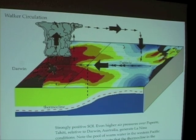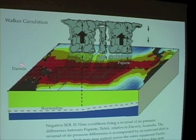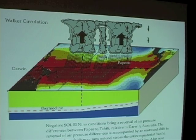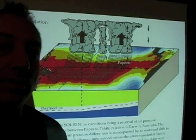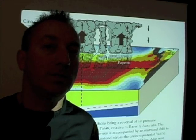El Niño is just the opposite. The whole system breaks down, so to speak. Trade winds relax. The air pressure between Papeete and Darwin switches, so we may have higher pressure here and lower pressure here, or nearly the same pressure. Trade winds start to blow in the opposite direction, and that's one of the first indicators of an El Niño — because trade winds begin to blow in an opposite direction.